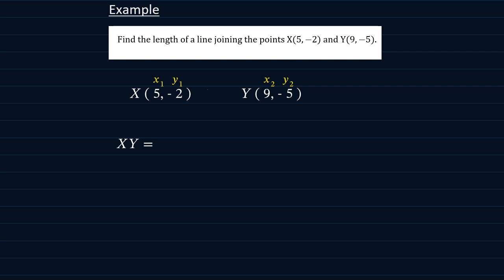XY is equal to the square root of 9 minus 5 all squared. That's our x2 minus x1 squared, plus minus 5 minus minus 2, which is our y2 minus y1 squared.